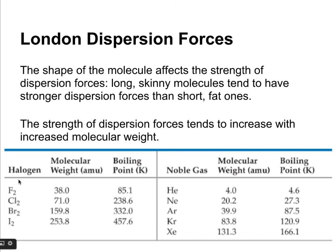Looking at this table of the halogens, starting at fluorine and going down the group to iodine, molecular weight increases and so does the number of electrons, and you see that makes the boiling point go up a whole lot — we have to use more energy to overcome the London dispersion forces. Same thing with the noble gases: as you go from helium down to xenon, from a small atom to a large atom, the number of electrons increases, which means the polarizability of the atom increases, leading to stronger London dispersion forces.